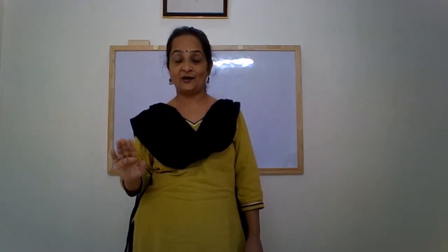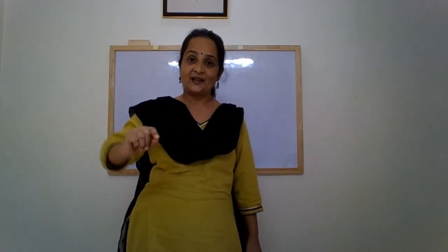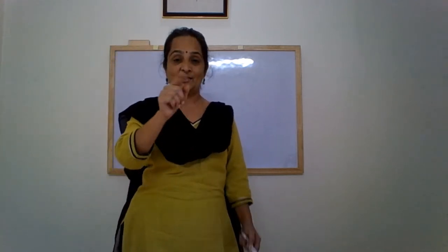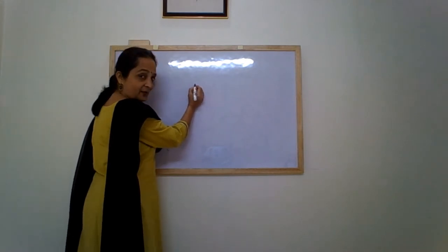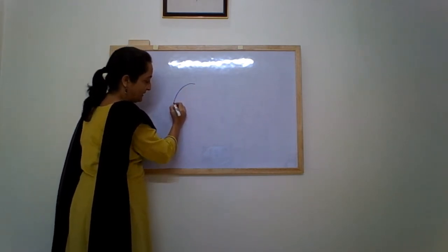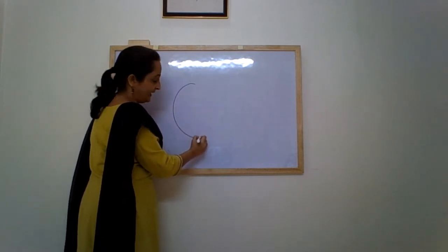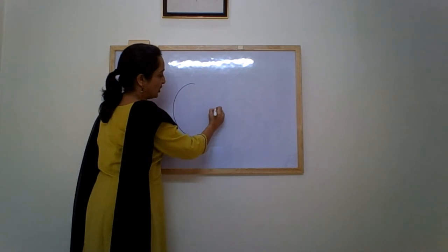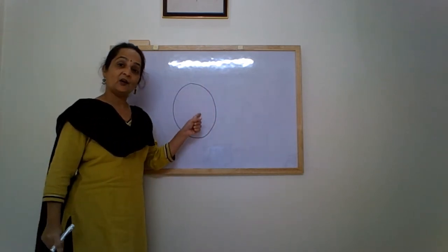Do not go from down up — that's wrong. We start from up, we go down, we make a C and then we come up and join it up again. Letter O.